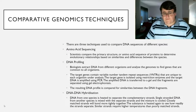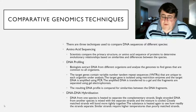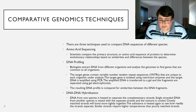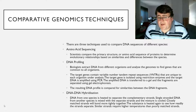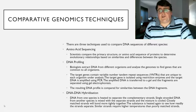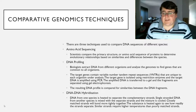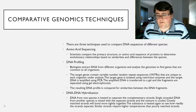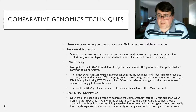We have three different techniques. The first one, amino acid sequencing, is literally scientists comparing the primary structure or the amino acid sequence of proteins to determine the evolutionary relationships between two species based on the similarities and differences in those amino acid sequences. Remember, most of the proteins in living things are very similar. So amino acid sequencing is just comparing the amino acid sequence of proteins in multiple species.